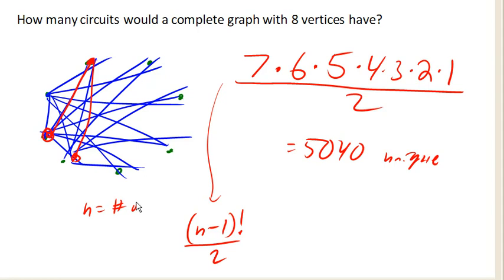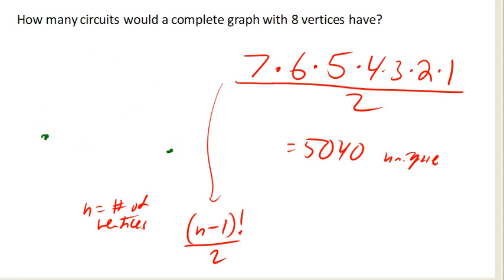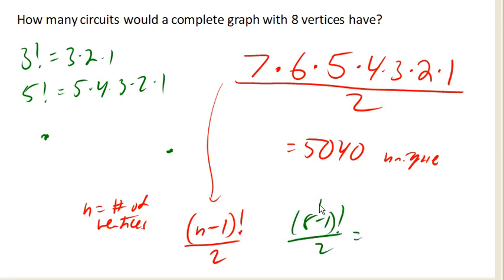If you've never seen this before, the idea of a factorial is that, for example, 3 factorial means 3 times 2 times 1. So in this case, this would be 8 minus 1 factorial over 2, which means that's 7 factorial, which means 7 times 6 times 5 times 4 times 3 times 2 times 1 all over 2, which you'll recognize is exactly what we have there. And if your calculator happens to have that factorial button, it can come in handy.